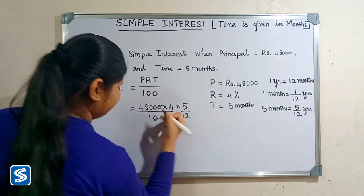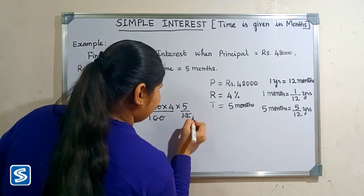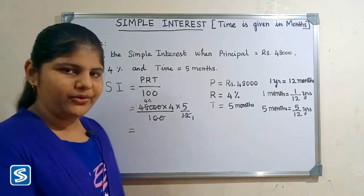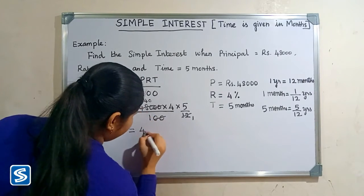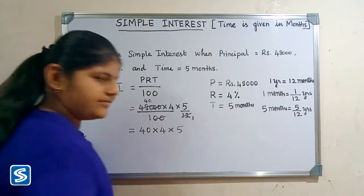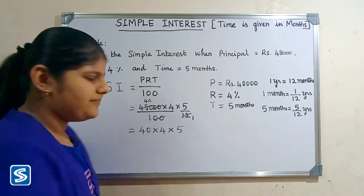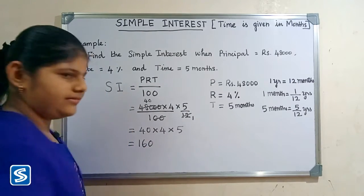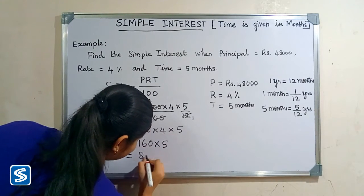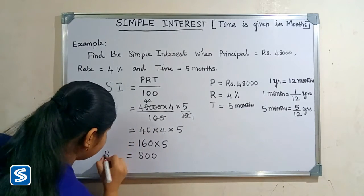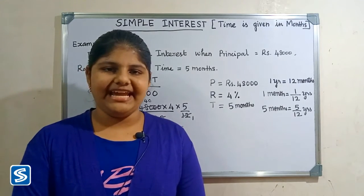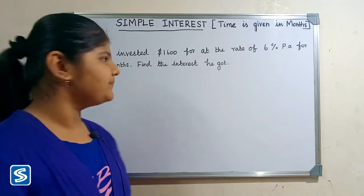Here the zeros get cancelled. 40 multiplied by 4 will be 160, and 160 multiplied by 5 will be 800. So simple interest is equal to rupees 800.